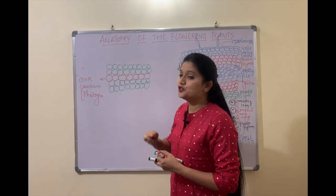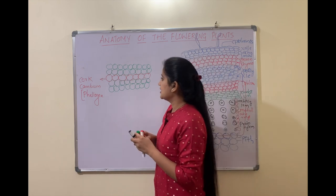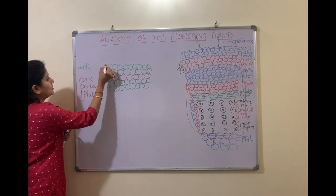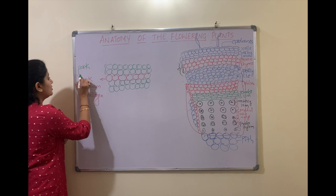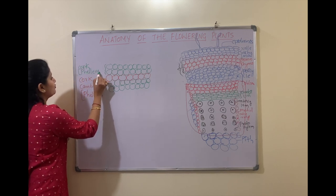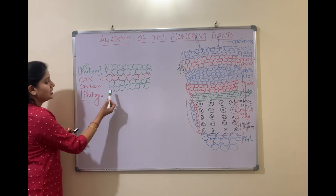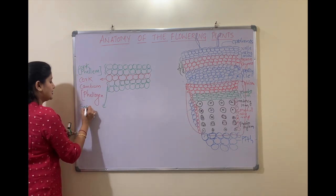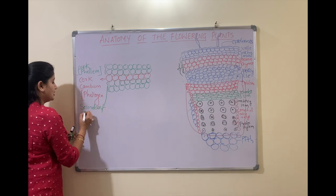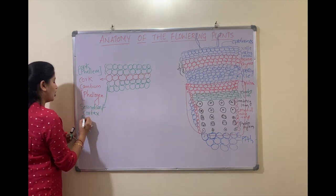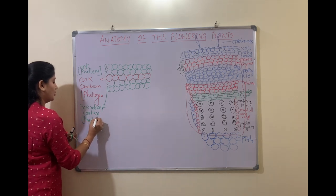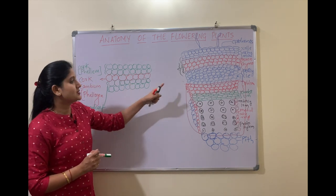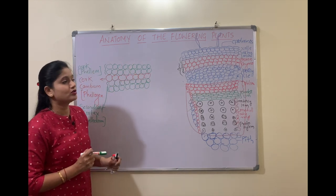The cells produced on the outer side are called as cork, also called as phellem. The cells produced on the inner side are called as secondary cortex, which is also called as phelloderm. So on the inner side new cells are formed, and on the outer side also new cells are formed.